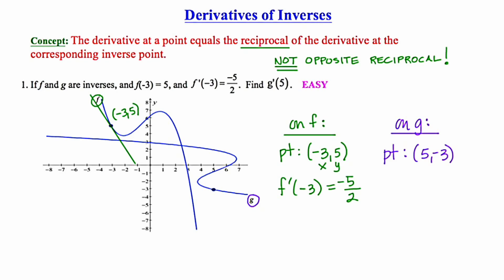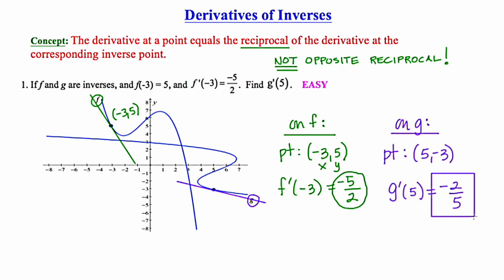My objective is to find the slope of the line tangent to the graph of g at 5. I'll draw that tangent line in. Going back to our main concept — the derivative at a point equals the reciprocal of the derivative at the corresponding inverse point — since that derivative was negative 5 halves, the derivative of g at 5 is the reciprocal, which is negative 2 fifths. That's the answer to question number 1.